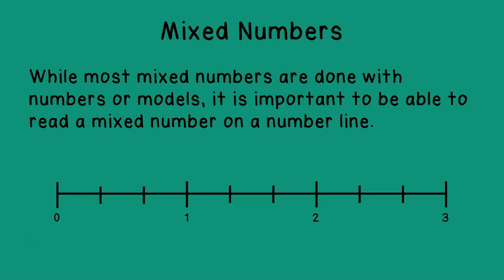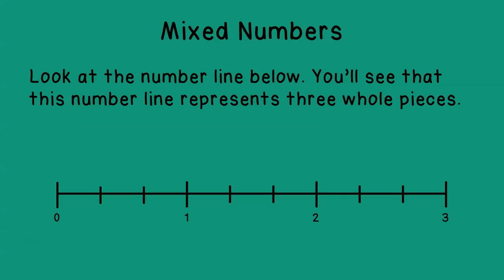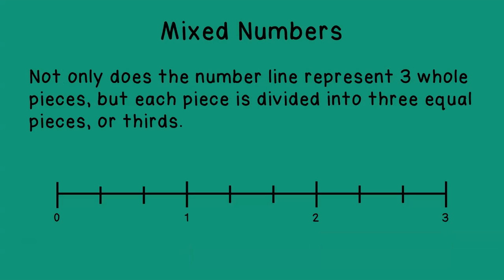Now while most mixed numbers are done with numbers or models, it's important to be able to read a mixed number on a number line. Now most number lines will go from 0 to 1. But in this case, if you take a look, our number line is actually represented by 3 whole pieces. Here's the first one, the second one, number 2, and number 3. This might be a very long candy bar or something cut into 3 sections and pushed back together. Now not only does the number line represent 3 whole pieces, but each piece is then divided into 3 equal parts, or as we know it, thirds.